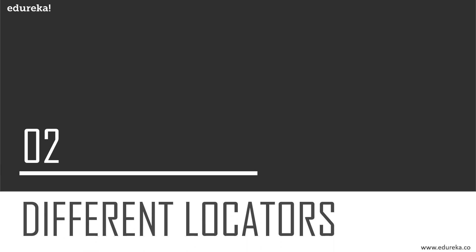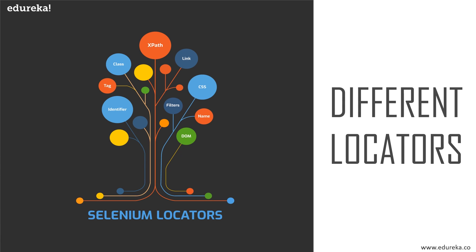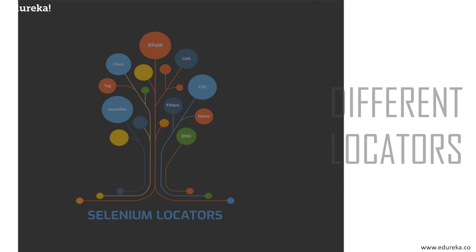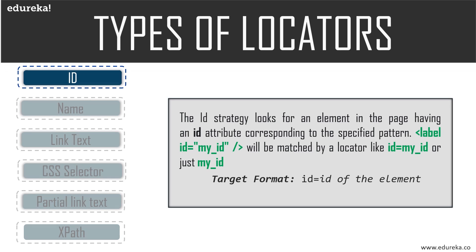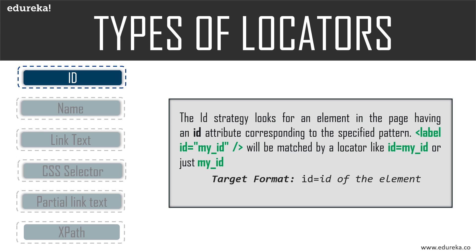There are six types of locators. We can locate any element on the web page using their ID, Name, Class, XPath, CSS Selector, Partial Text, and Link Text. Let's understand them one by one. First is the ID — the most common way of locating elements since IDs are supposed to be unique for each element. This locator looks for an element having an ID attribute; the target format is: ID equals the ID of the element.